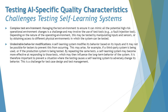The final challenge is undesirable behavior modifications. A self-learning system modifies its behavior based on its inputs, and it may not be possible for testers to prevent this. This may arise if a third-party system is being used or if the production system is being tested. By repeating the same test, a self-learning system may become more effective at responding to those tests, which may influence the long-term behavior of the system. It is important to prevent a situation where testing causes a self-learning system to adversely change its behavior — this is a challenge for both test case design and test management.